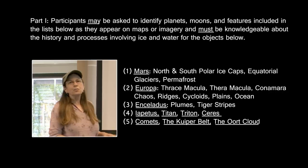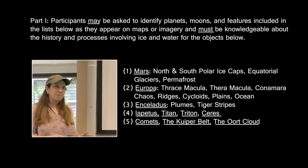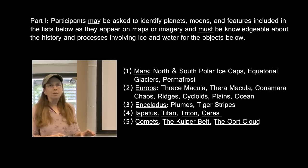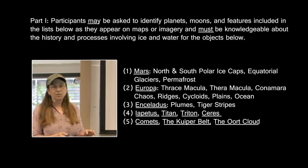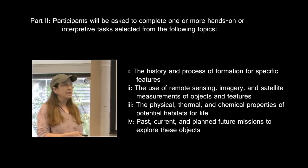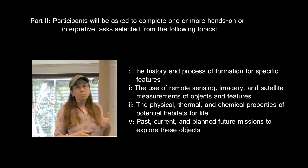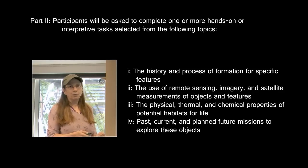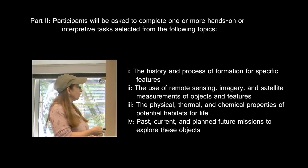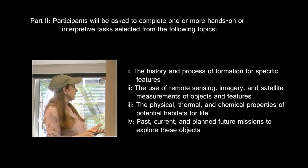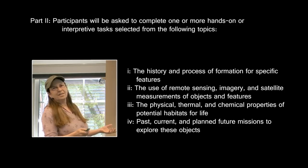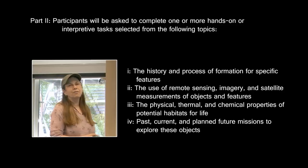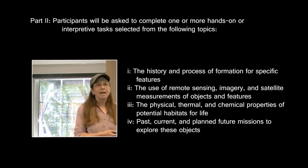The second is knowledge about the history and the process of water — water movement, water formation, and IC material that has moved or formed — and how they are related to the surface features on these objects. In the Interpretive Task section, the second section covers the history and process of the formation of these features, remote sensing, and everything that we know about planets. Most of what we know about the Earth itself is now produced by remote sensing of orbiting satellites, so you have to understand remote sensing, and also the current, future, and past missions that have done the remote sensing to contribute to the knowledge base we have about water and its formation, as well as the physical, thermal, and chemical properties that are suitable for habitability or life.